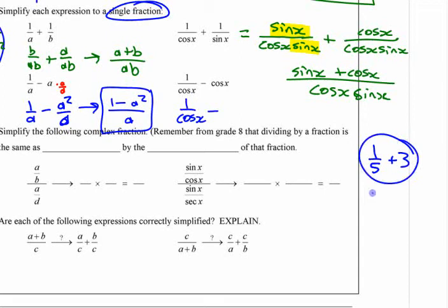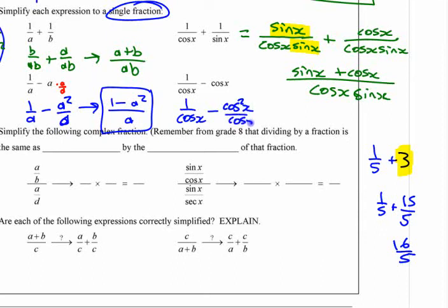If you wanted to combine those together as a single fraction, you'd have to turn this one into a fraction that has a 5 on the bottom. You'd have to make it 15 over 5, right? And then the entire thing would be 16 over 5. It's exactly the same thing as that. This would have to be cos squared over cosine. Cos squared over cosine is the same as just cosine all by itself.